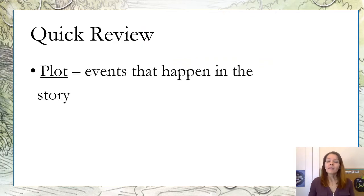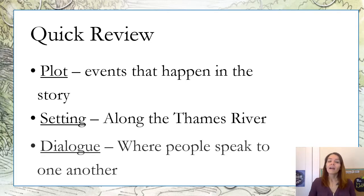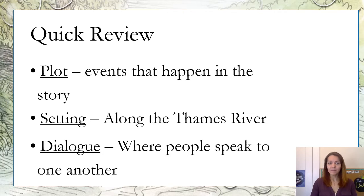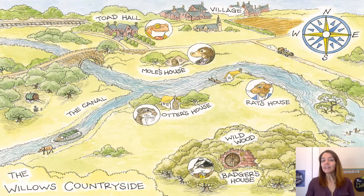Quick review: the plot is the events that happen in the story. The setting is along the river. And dialogue is where two people — or multiple people — speak to one another.